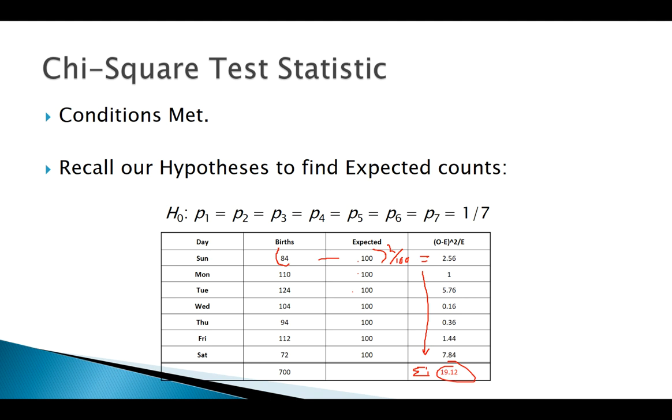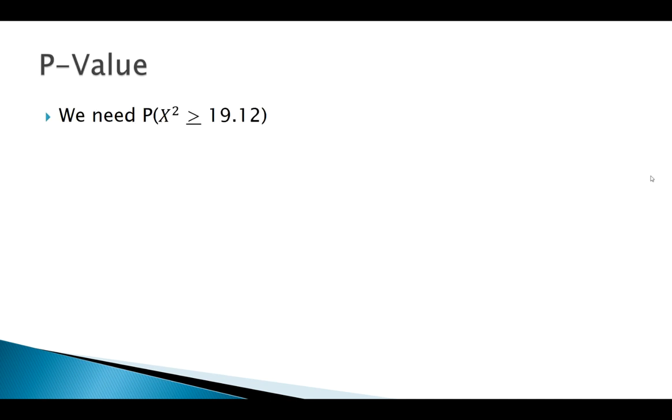Let's find a p-value. Here's how in probability notation we would write that p-value. Remember we're always going to treat these as right tail because our chi-squared test statistic is always positive. What about our degrees of freedom? Well, there's seven days of the week, seven groups, k is seven. We didn't have to estimate any parameters here. 7 minus 1 equals 6.